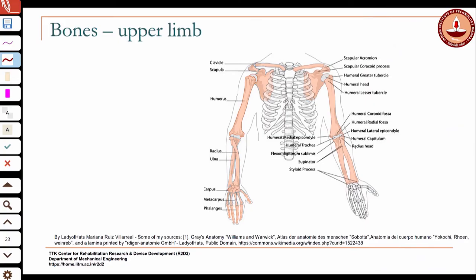The radius is the bone on the side of your thumb. If you see here, this bone here is the radius. You have the ulna, and the radius and ulna form the forearm. The junction where the humerus meets the radius and ulna is your elbow joint.